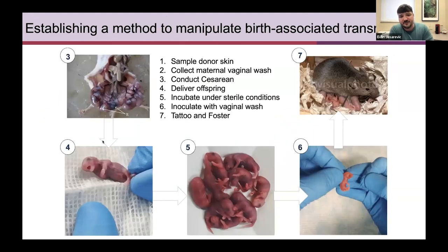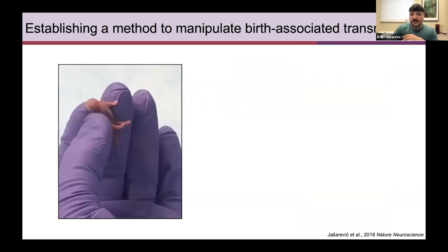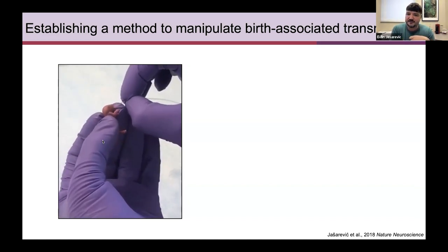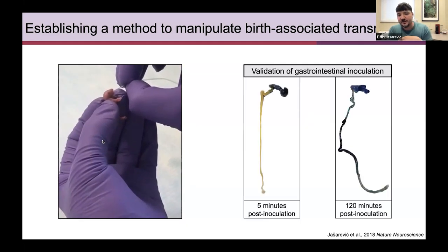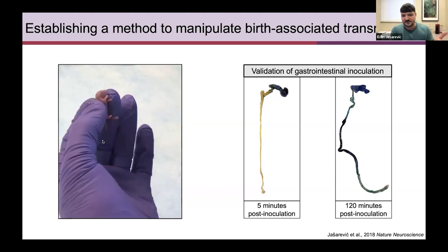We use mice, conduct a C-section, maintain them in a sterile environment, and then colonize these mice with various human microbial community mixtures to ask mechanistic questions about safety and efficacy. Specifically, I take a PICC line, guide it down the esophagus into the stomach of a three-minute-old pup, and release about 20 microliters of vaginal fluid for colonization. Using blue dye validation, within five minutes the dye is localized in the stomach, and within two hours it has spread throughout the entire intestine, confirming successful colonization.